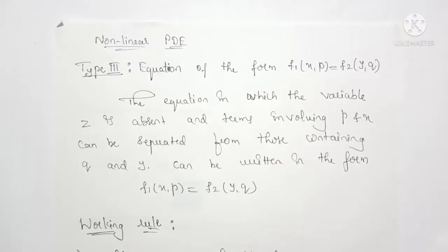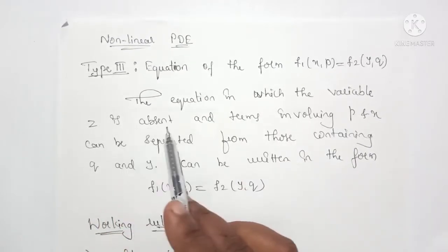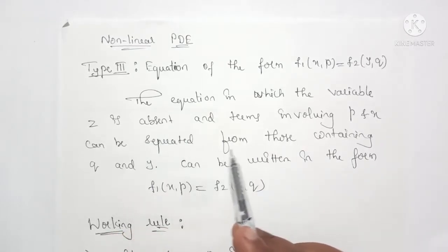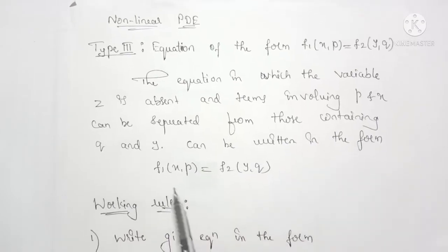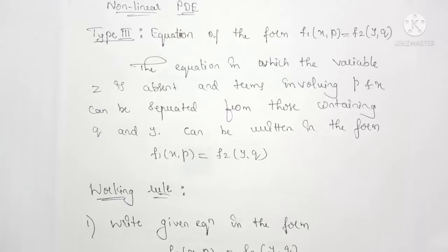Welcome back. In this video we continue with the nonlinear PDE of Type 3. Type 3 means the equation contains both x and y terms but not z terms. In Type 2, the equation contained only z terms and was independent of x and y, but here it is independent of z. The equation can be written in the form f1(x, p) = f2(y, q), where the p and x terms can be separated from the q and y terms.